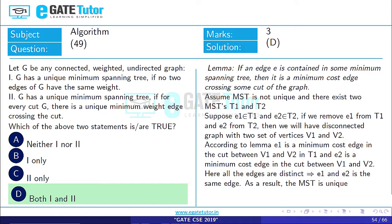Statement second: G has a unique minimum spanning tree if for every cut G, there is a unique minimum weight edge crossing the cut. Here in the second statement, it is given that the minimum weight edge crossing the cut is unique.